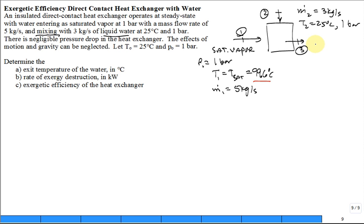There's negligible pressure drop in the heat exchanger. So we know that everything is one bar coming in, going out. No pressure changes. And neglect effects of motion and gravity. So kinetic potential energy effects are negligible. Determine the exit temperature of the water. Nothing to do with thermo 2, it's just thermo 1. Can I get the exit temperature of the water? Can I find T3?